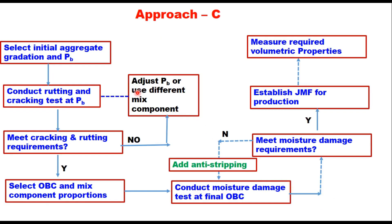Approach C starts with the current volumetric mix design method to establish only the initial gradation and initial binder content — it is not the optimum binder content, nor is it the final gradation. At this gradation and binder content, we conduct rutting and cracking tests. The passing binder content (PB) can be a single value or multiple values in steps of 0.3 or 0.5 percent binder content. We do not determine volumetric properties here — we go directly to rutting and cracking tests.